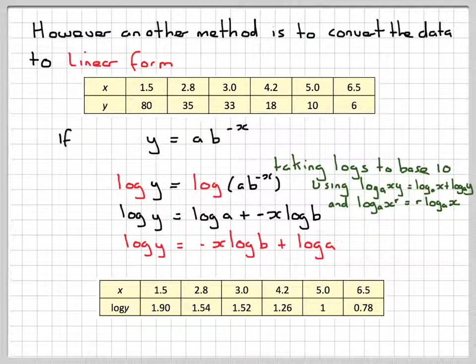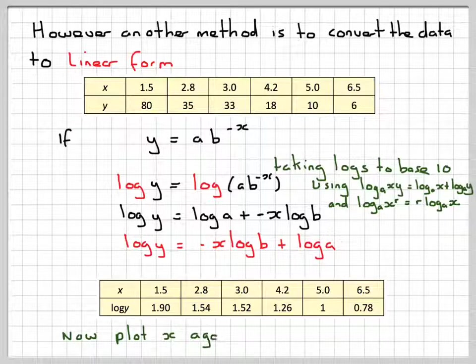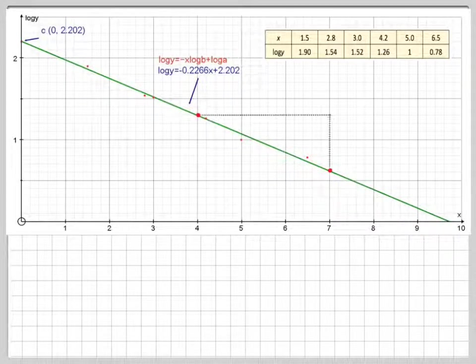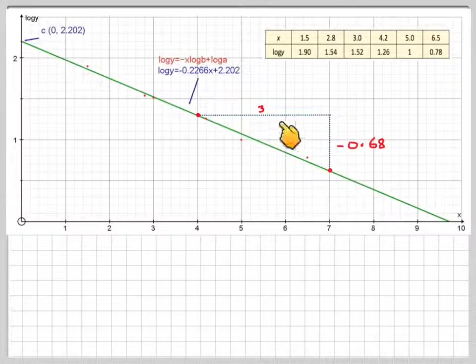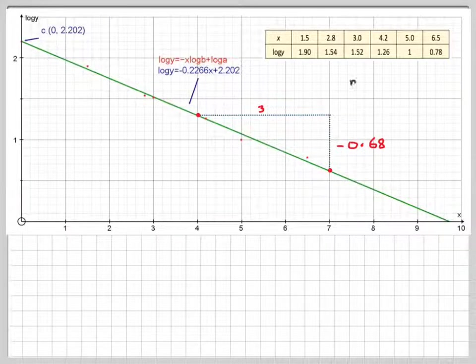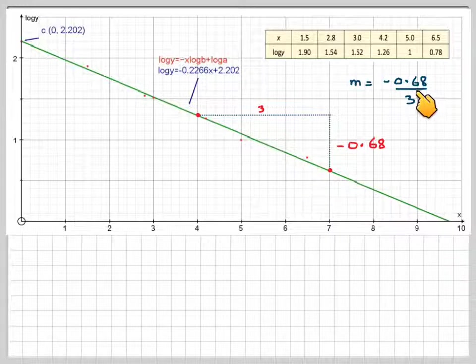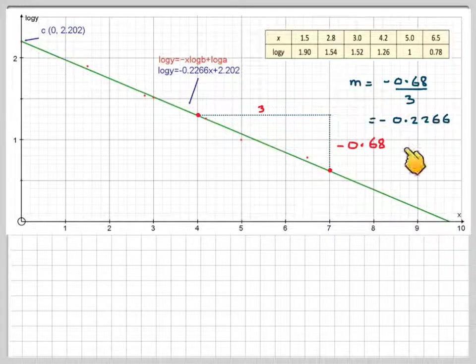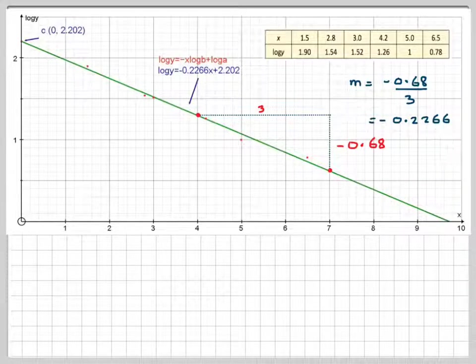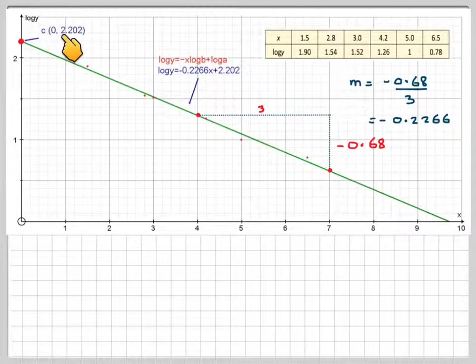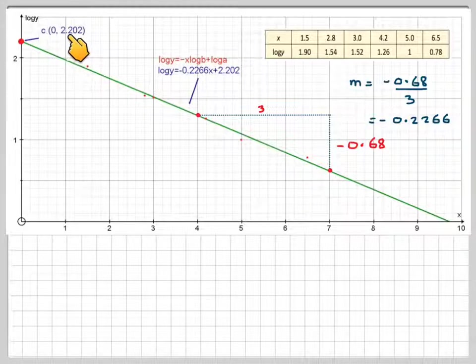Plotting that on Autograph we end up with this. Now in order to, if we were doing this manually, we'll draw the graph, draw this line by eye best fit. To find the gradient we'll pick two points and draw in the lines. So here this is 3, this is minus 0.68, the gradient is change in y divided by change in x, so it's going to be minus 0.68 divided by 3 which is equal to minus 0.2266, which is the same as we've got here. And my intercept will be 2.2.